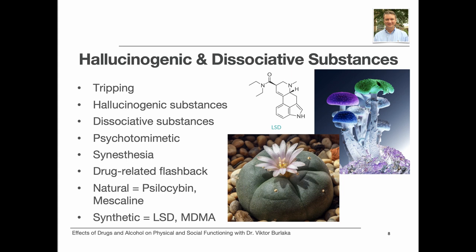Examples of naturally occurring hallucinogenic substances are psilocybin or magic mushrooms, and mescaline and peyote cactus. Examples of synthesized hallucinogenic substances are LSD, lysergic acid diethylamide, and MDMA or ecstasy. Examples of synthesized hallucinogenic dissociative substances are PCP or phencyclidine, ketamine, and dextromethorphan DXM — the substance found in many cough medicines.